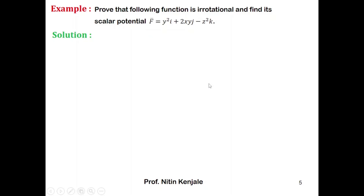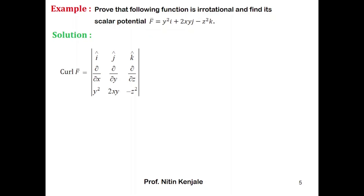To prove that f bar is irrotational, we have to prove that curl of f bar is zero, that is the vector product of del and f bar is zero. We know that curl of f bar is given by a determinant, so let us calculate it: i times (∂/∂y of −z² which is zero, minus ∂/∂z of 2xy which is again zero).